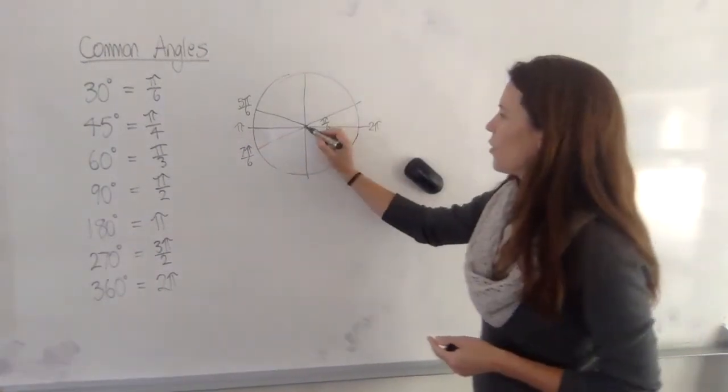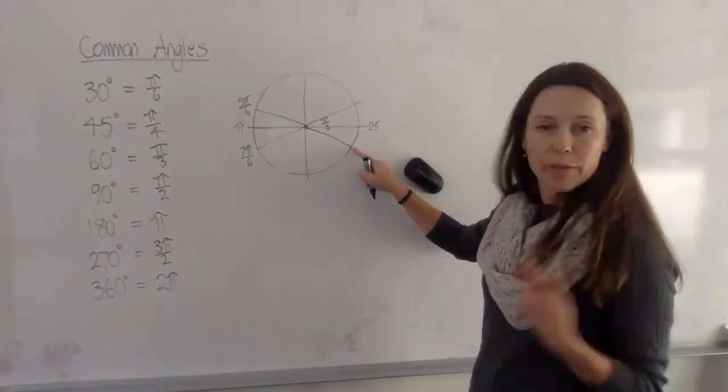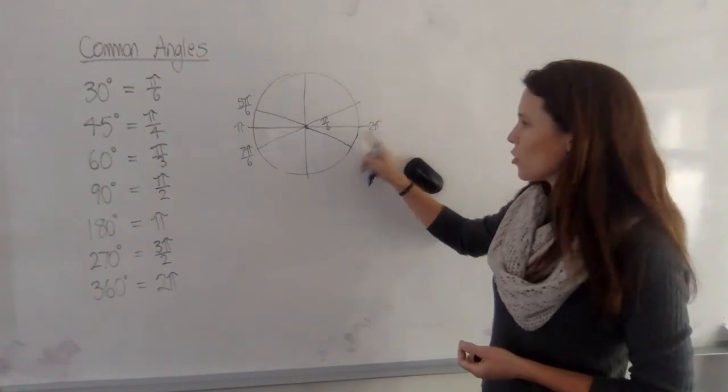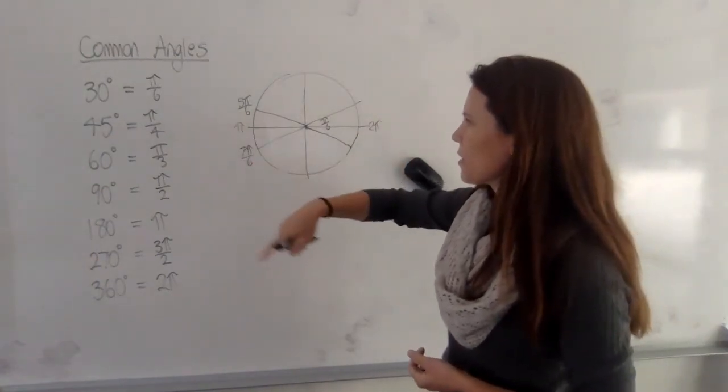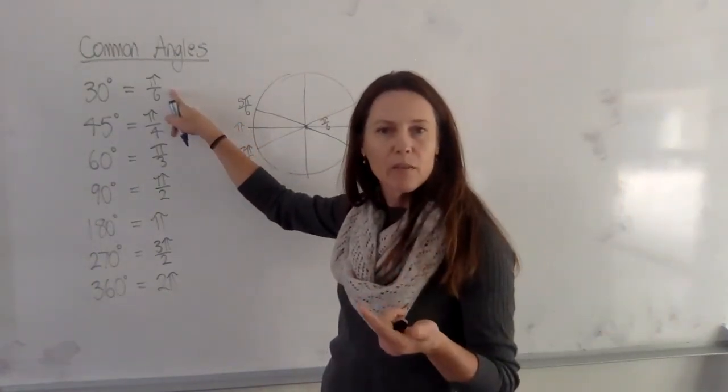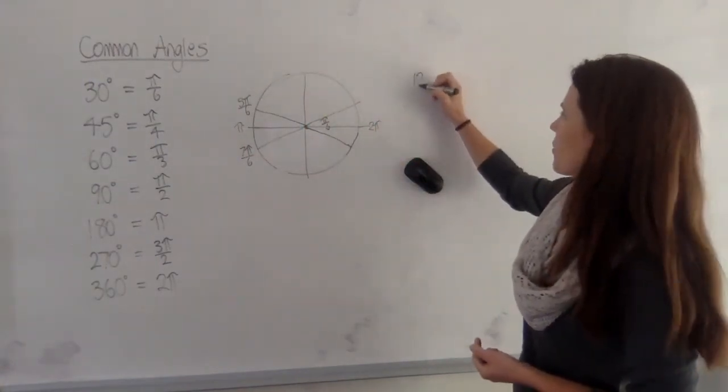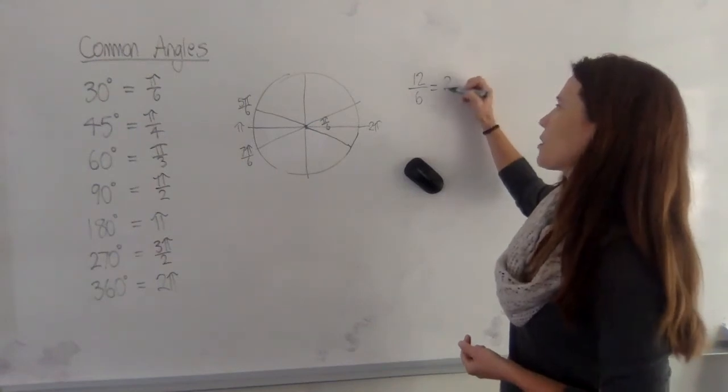And over here for what we would normally call 330 degrees, well, you can think of 2 pi in terms of your sixths here. Since 30 degrees is 1 sixth of a pi, you're going to have 12 sixths if you go all the way around, okay? Because thinking about it, 12 sixths is the same as 2.